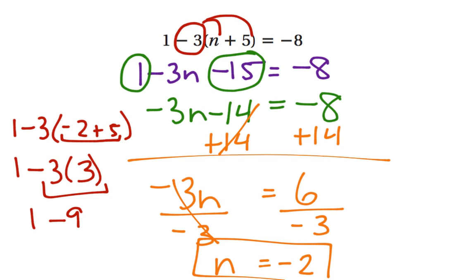We have 1 minus 9, which gives us negative 8—exactly what we wanted. So our solution is n equals negative 2.